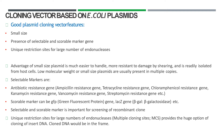Coming to selectable markers, let's talk about the antibiotic resistance genes. The ampicillin resistance gene is very common and is present in almost every cloning vector. There are also: tetracycline resistance gene, chloramphenicol resistance gene, kanamycin resistance gene, vancomycin resistance gene, streptomycin resistance gene, and many other antibiotic resistance genes, all of which help us find transformed cells.